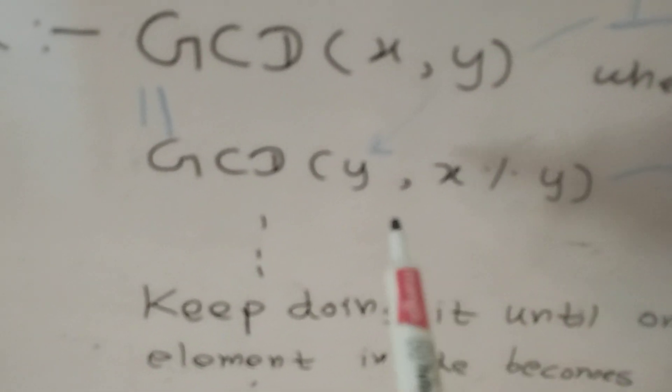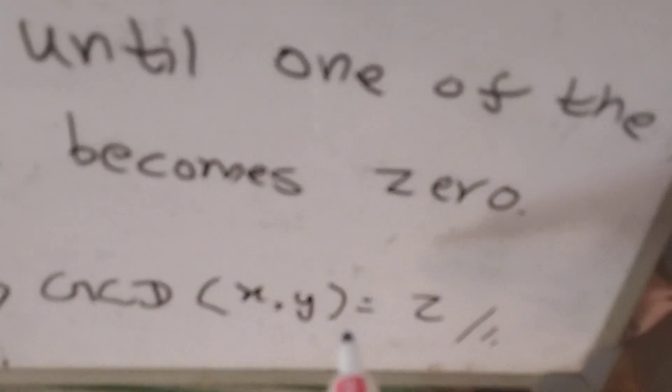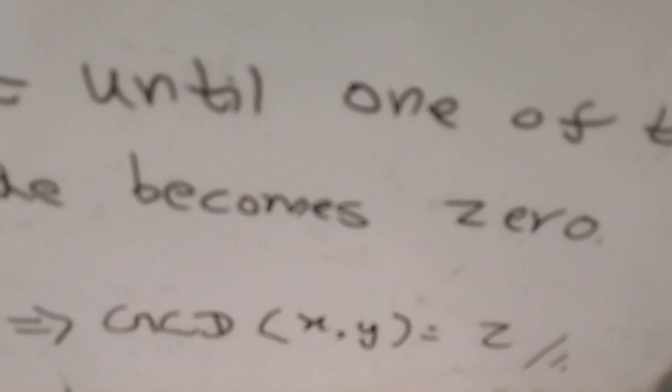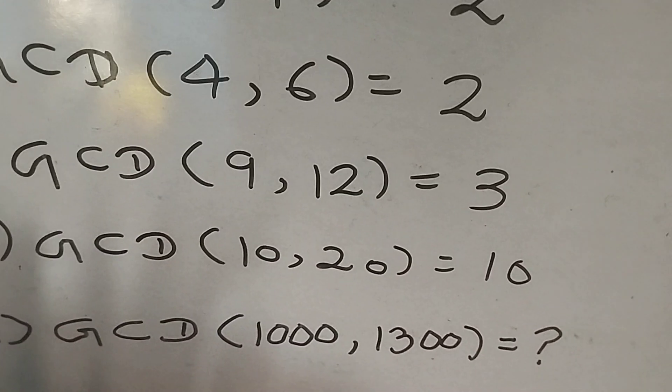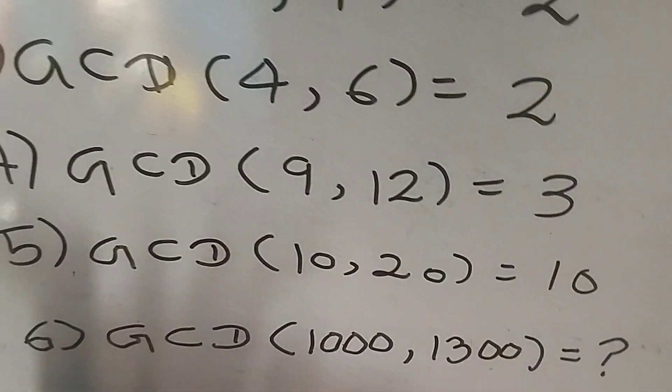The third step is to observe whether any number inside is zero. If one is zero, take the other number — that is your answer. So GCD(x, y) = z in that final step. We're now going to solve this problem using this easy trick method rather than the trivial hard method.